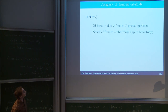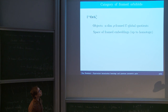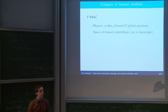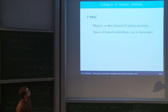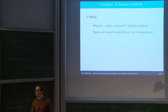These of course fit into a category of framed global quotients, and the type of maps we're considering are framed embeddings. But these are framed only up to a prescribed homotopy — you don't need to preserve the framing on the nose. In fact, there's a whole space of these framed embeddings, so it's rather a topological category, or an infinity category if you prefer.